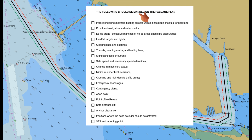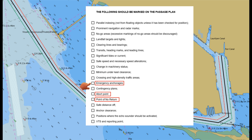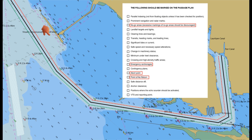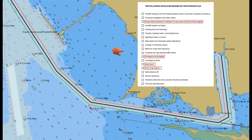This checklist may be available on board and outlines key elements that should be marked in the passage plan, whether using a paper chart or an electronic navigational chart. In this video, we will determine the point of no return and abort point, and also include the emergency anchorage. But before determining these key elements, let us first mark the no-go areas.